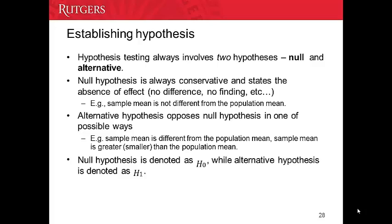For example, we may say the sample mean is not different from the population mean. If we think there is no finding, the null hypothesis will say there is no result, no finding. We have another hypothesis — the alternative hypothesis. It is the opposite of the null hypothesis. In the previous example, we will say the sample mean is different from the population mean, or the sample mean is larger than the population mean, or the sample mean is smaller than the population mean.